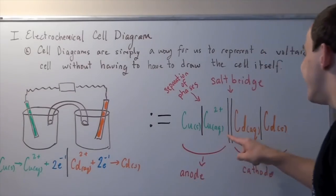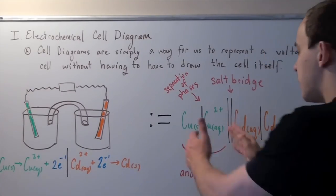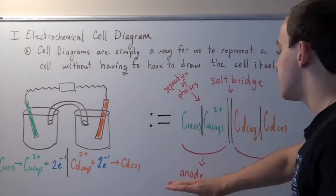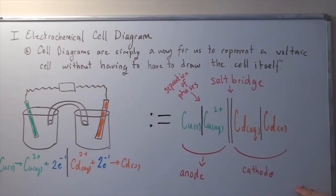This is our anode, and this is our cathode. The thing on your left is always the anode. The thing on your right is always the cathode.